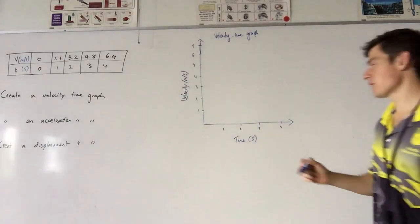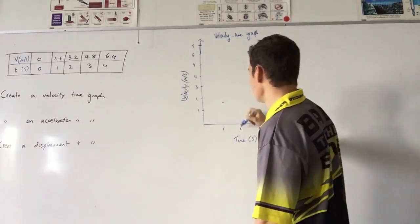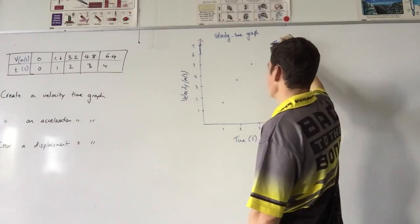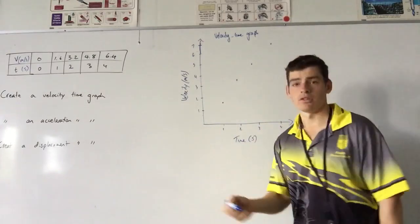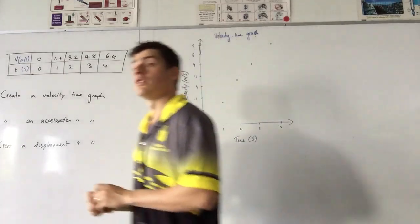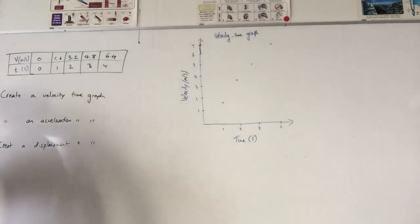So at one second, I expect to see a dot somewhere around here. Two, 3.2, three, up here, four, 6.4. What are those dots? Connect them with a line. Very good. I don't do a line of best fit with this graph. Why not?